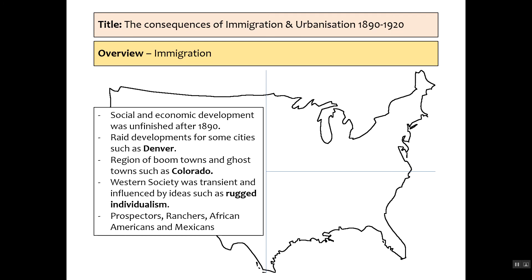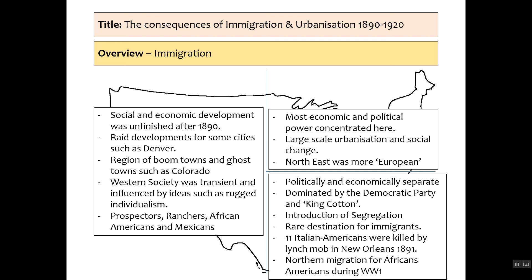In the west there's rapid expansion from 1865 to 1890 and it's still unfinished in this period. There are developments in some cities such as Denver, boom towns such as Colorado, and that attracts some immigrants. They're attracted by ideas such as rugged individualism and the population is therefore transient — they move very quickly, following the gold rush and other booms. So the west is very much populated by prospectors, ranchers, African Americans, and also Mexicans. We see a huge divide in terms of society when we look at all three regions together.